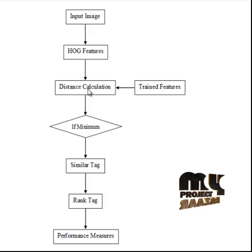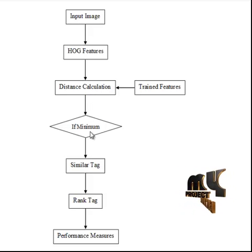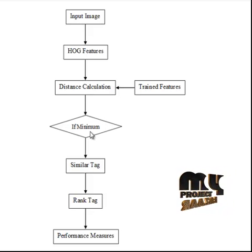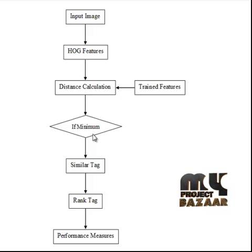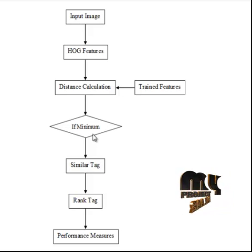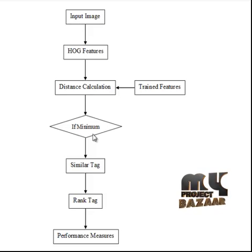The Euclidean distance value is used for the distance calculation. After calculation, the minimum value in the calculated distances is identified. If the value is at minimum, those images are considered as having similar tags. This is done for a set of images — for example, 10 images — and the 10 images with the smallest distance values are taken.